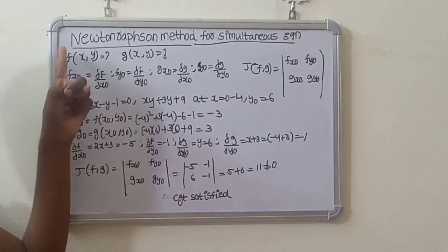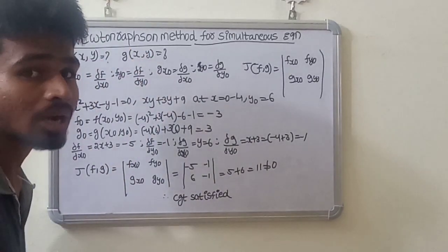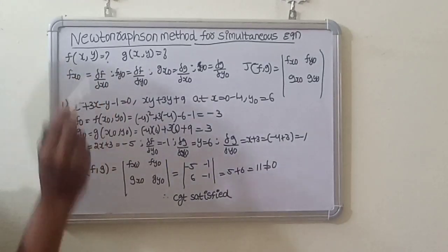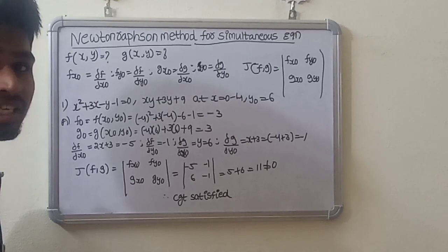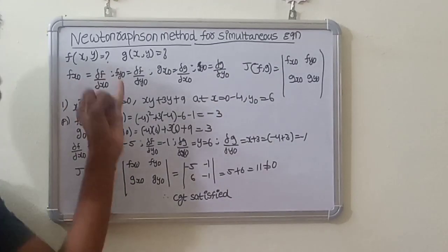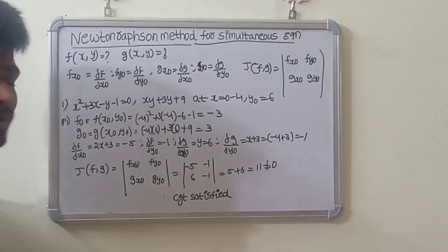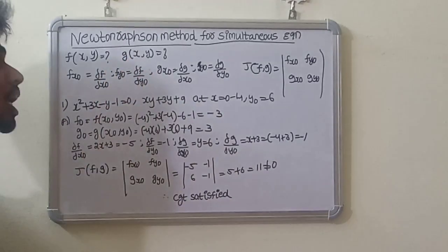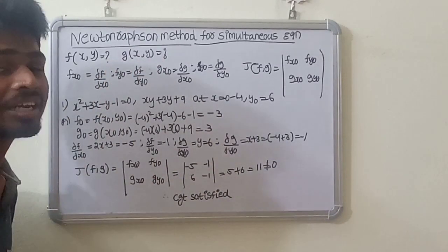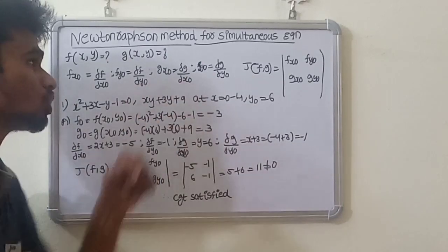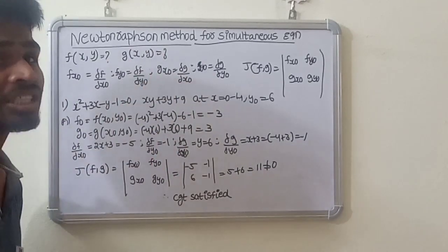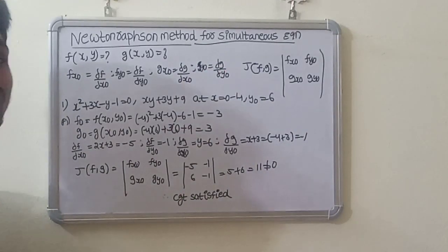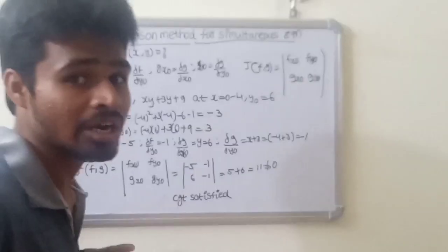First, take f of x naught and expand using partial differentiation with respect to x and y. Then take g of x1 and partially differentiate with respect to x and y. In Newton-Raphson method, we need to find the equations to solve this system.